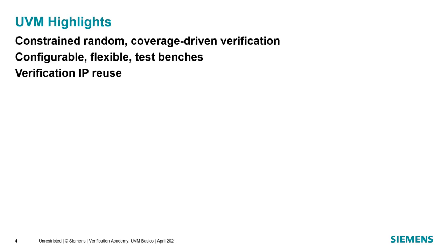Some of the highlights of UVM: it enables constrained random coverage-driven verification — that's kind of its reason for being. It allows you to put together configurable and flexible test benches, and it's really focused on verification IP reuse. SystemVerilog is a large language with many ways of doing things, and UVM tries to create freedom from choice so that everyone doing things the same way makes it easy to swap verification IP components.